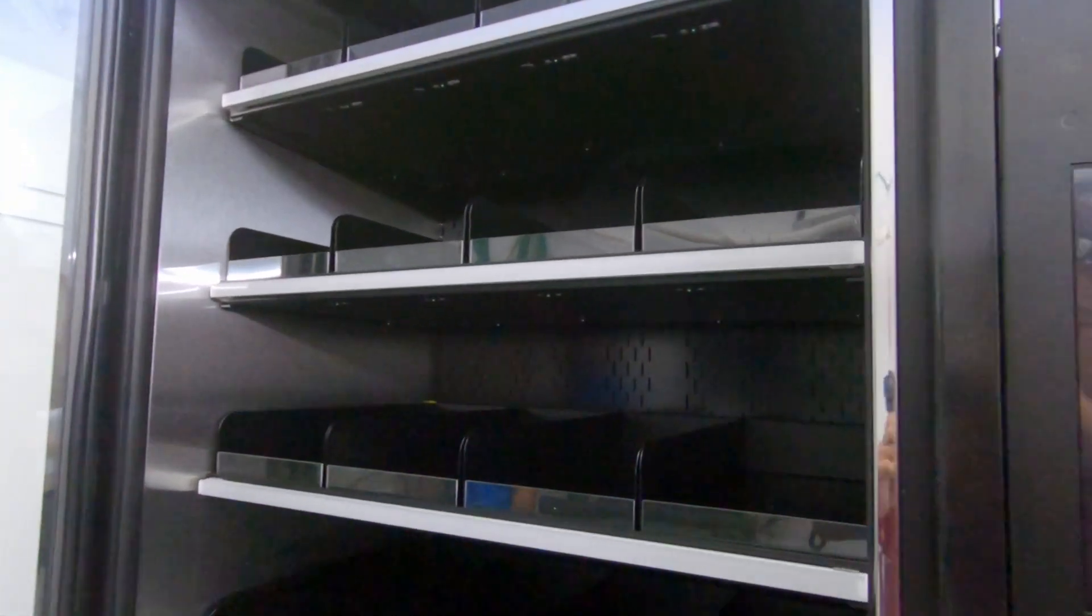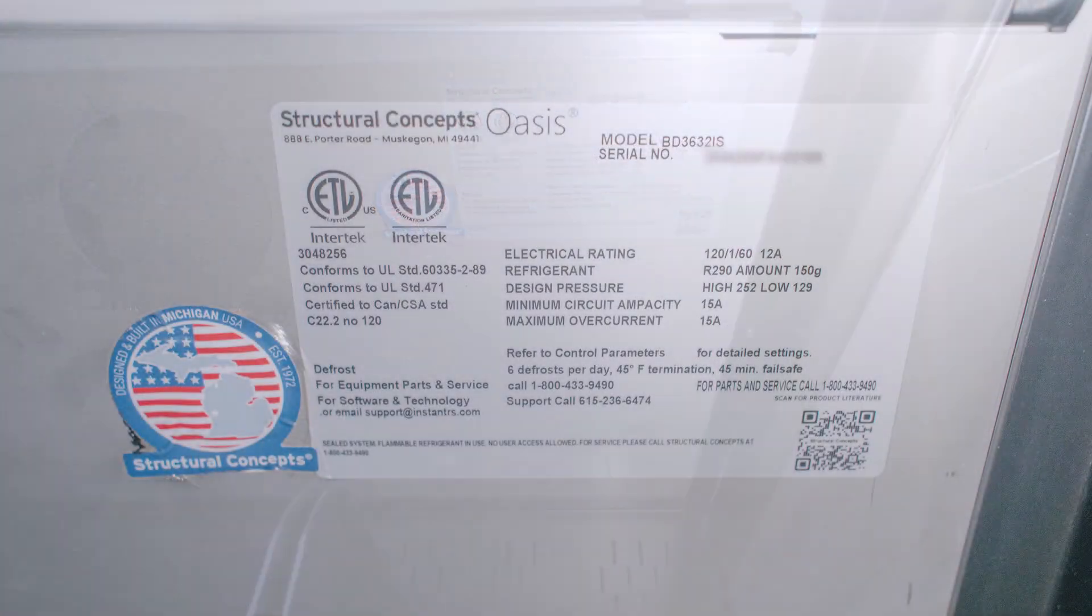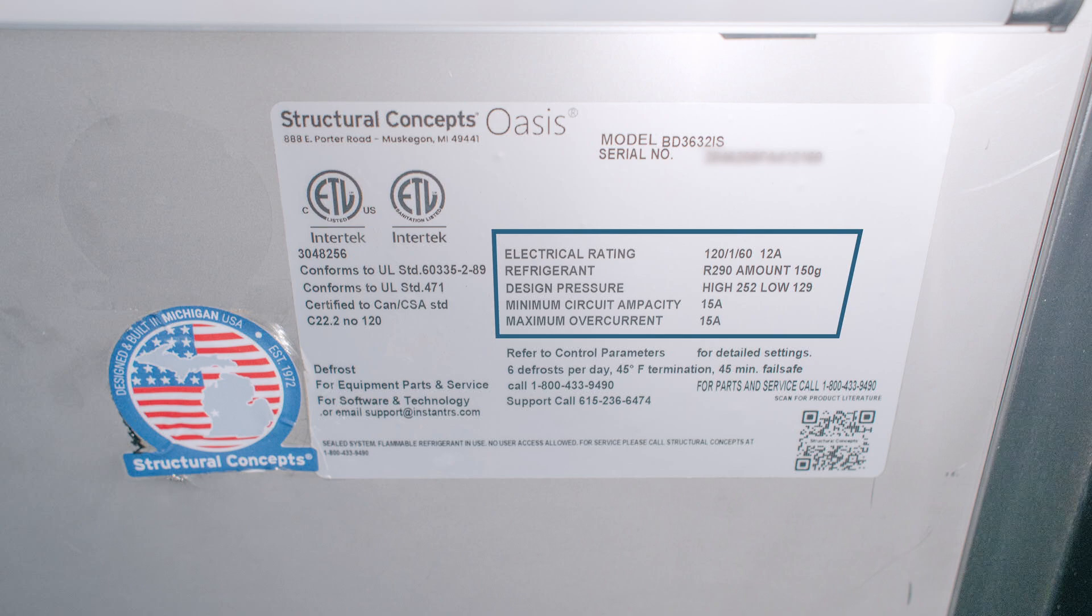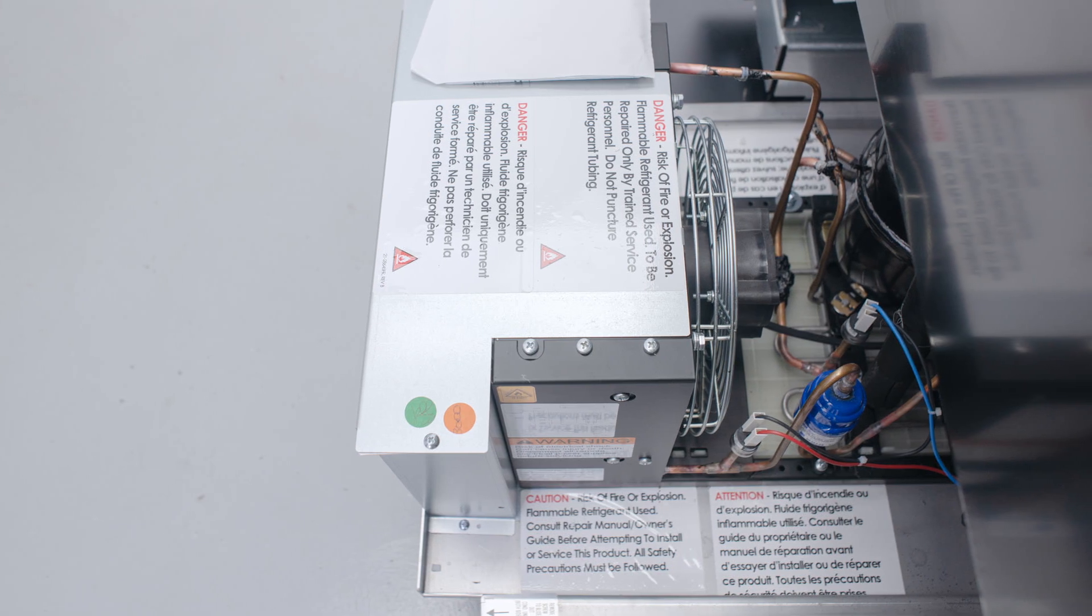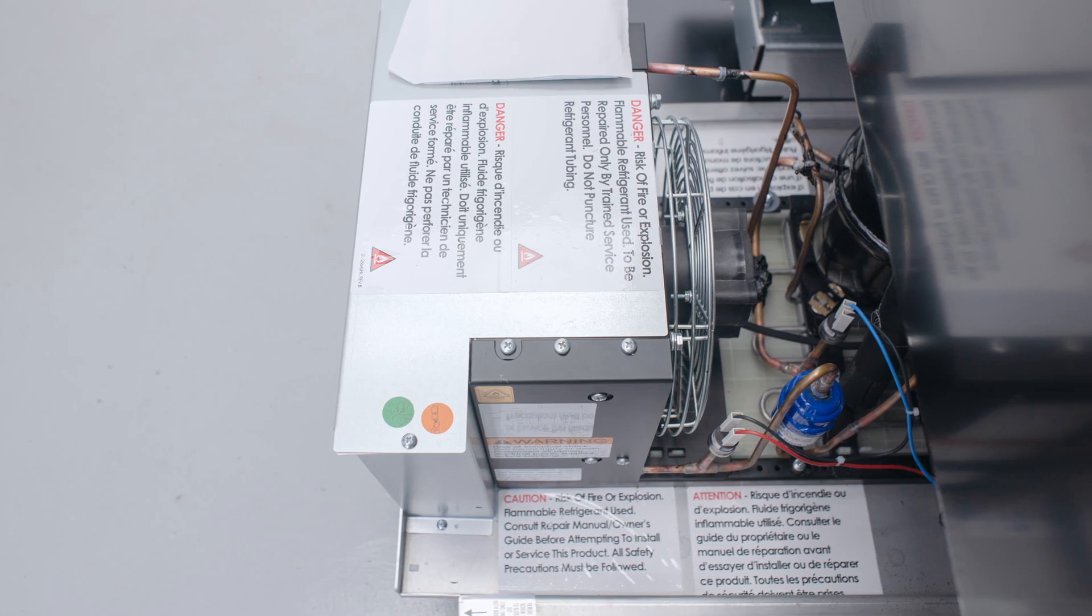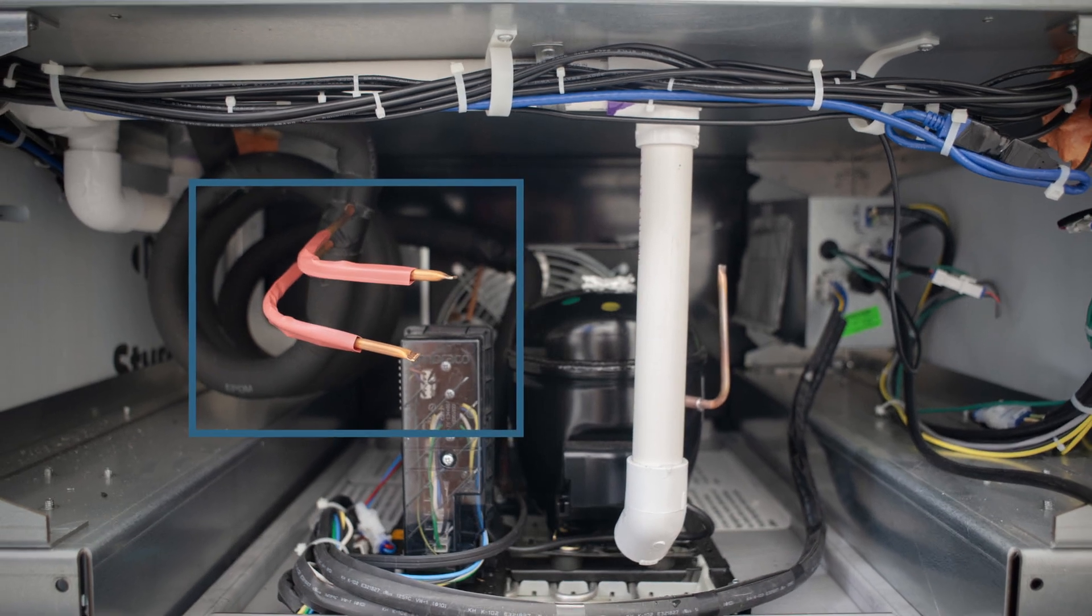To identify that the cabinet you're working on is using R290 refrigerant, check the serial label. We recommend taking a photo of the serial label for future reference. You will also see that the condensing unit is labeled as R290 and that the process ports are marked in red.